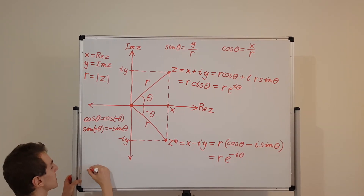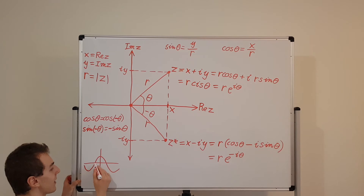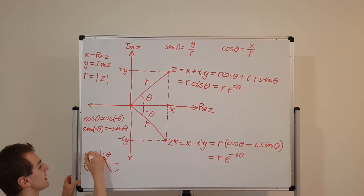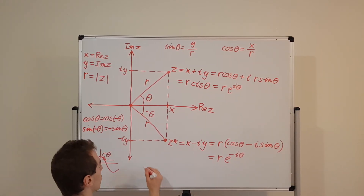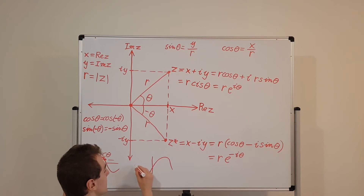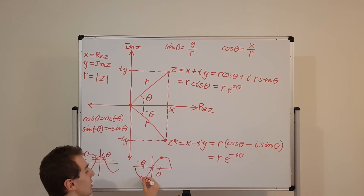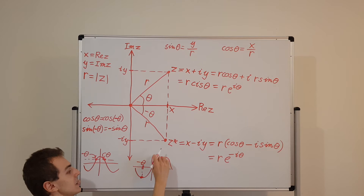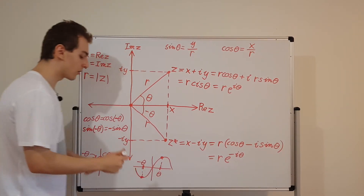To illustrate this symmetry and anti-symmetry: cosine looks like this — if you put in a negative angle, it gives you the same height. So if theta gives a certain output, minus theta gives the same output for cosine — that's why it's a symmetric function. But the sine function is different: if you have theta giving a certain output, minus theta gives the negative of that output. So cosine is symmetric and sine is anti-symmetric.